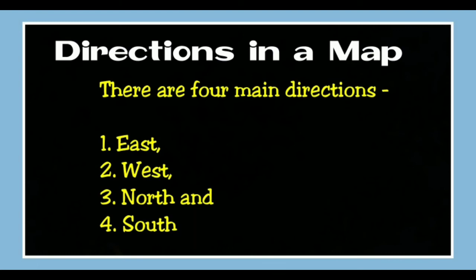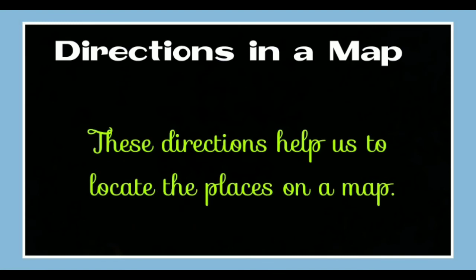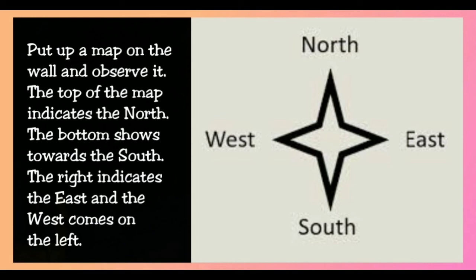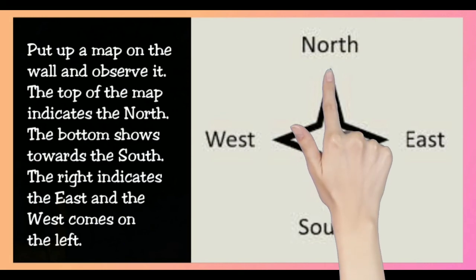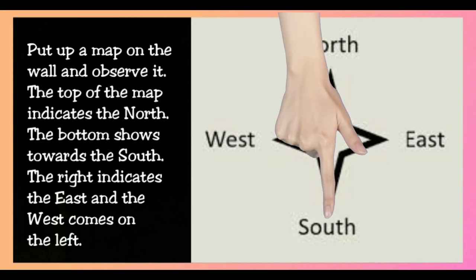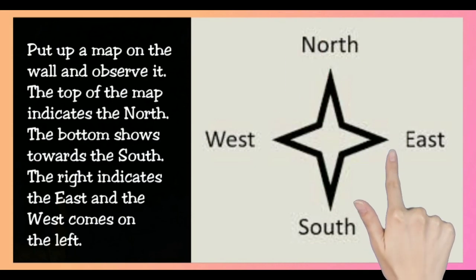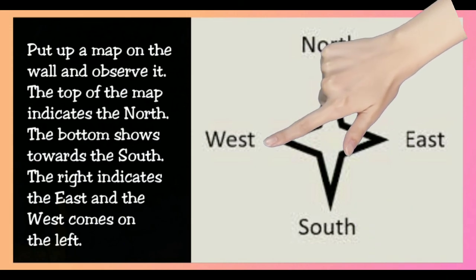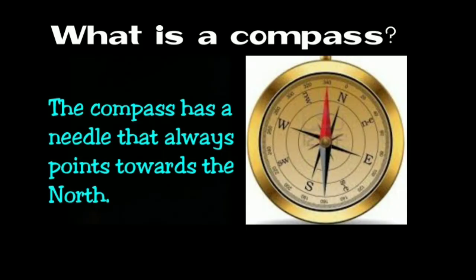In a map, there are four main directions: East, West, North, and South. These directions help us to locate places on a map. If you put up a map on the wall and observe it: the top of the map indicates North, the bottom shows South, the right indicates East, and the left indicates West.